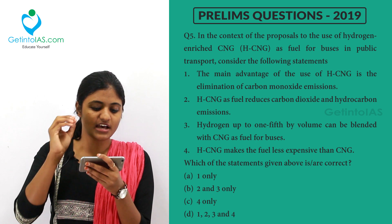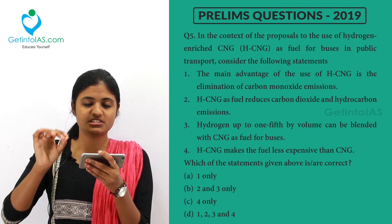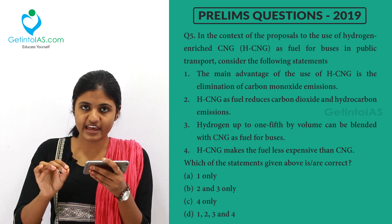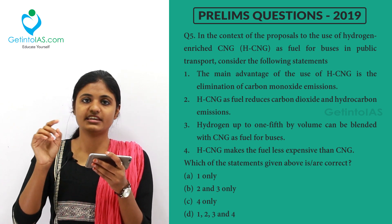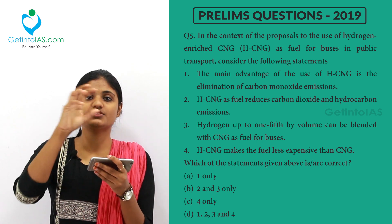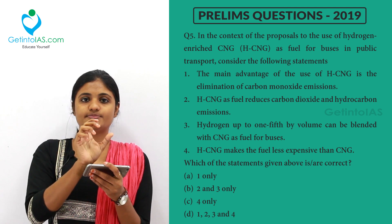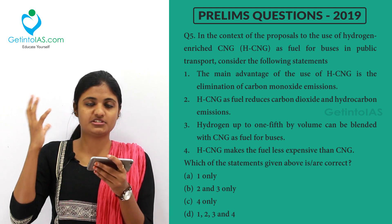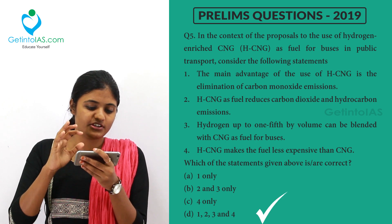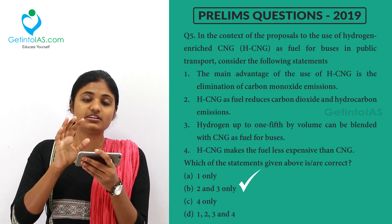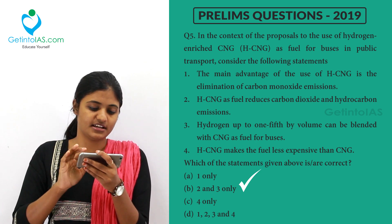The fourth option says hydrogen CNG makes the fuel less expensive than CNG. Is it right? No — HCNG is slightly more expensive than CNG, about five rupees more expensive. So option four is also wrong. When you eliminate option four, you get option B — options two and three are the correct answers.